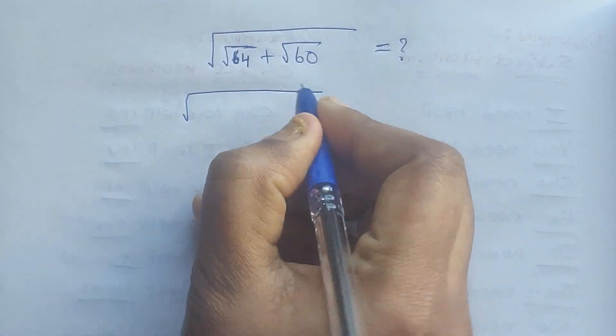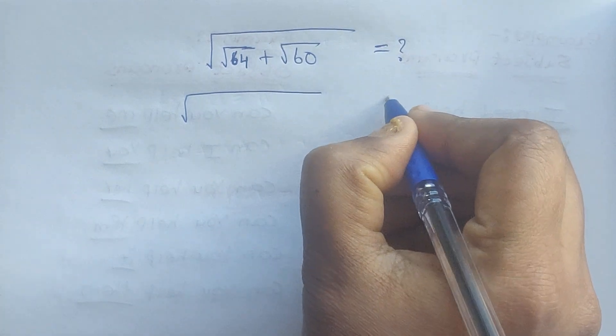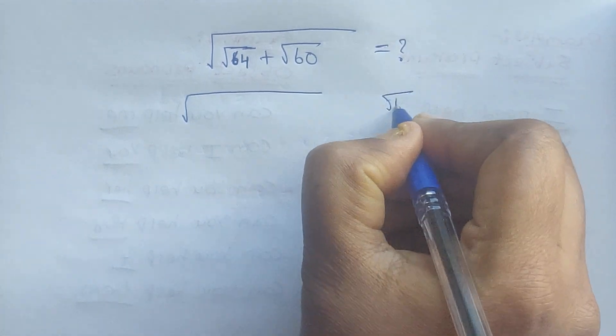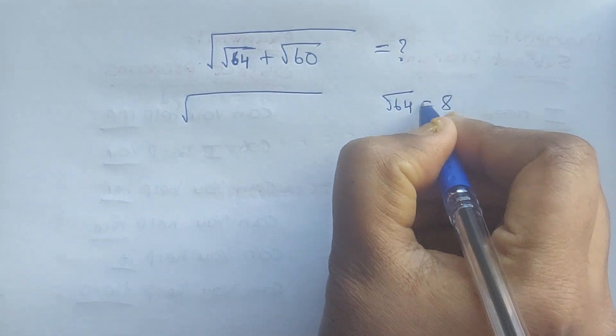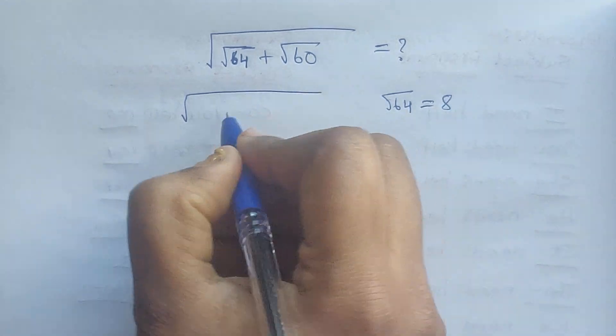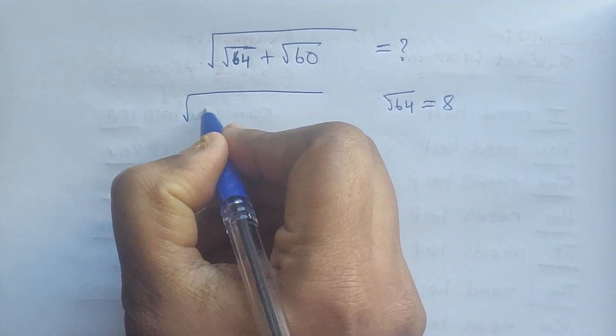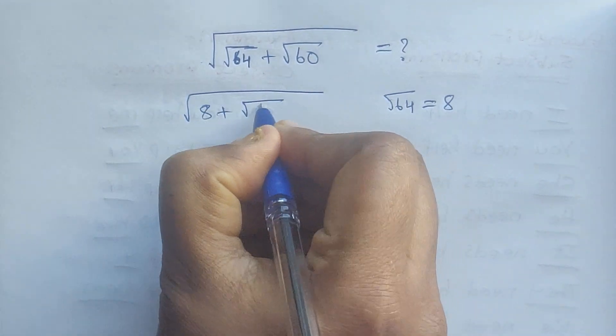So square root of 64 is 8. Square root of 64 equals 8, so we have 8 plus square root of 60.